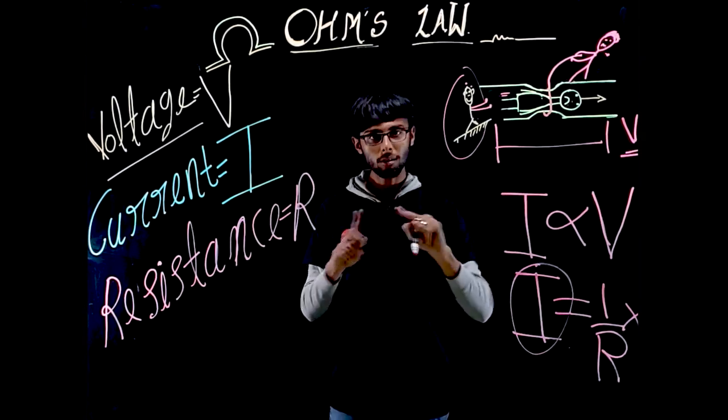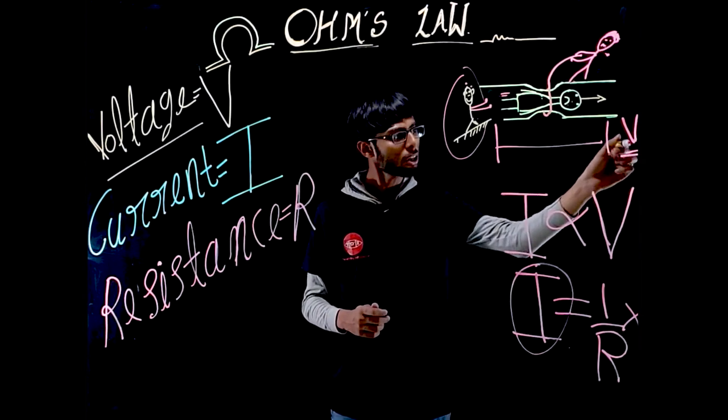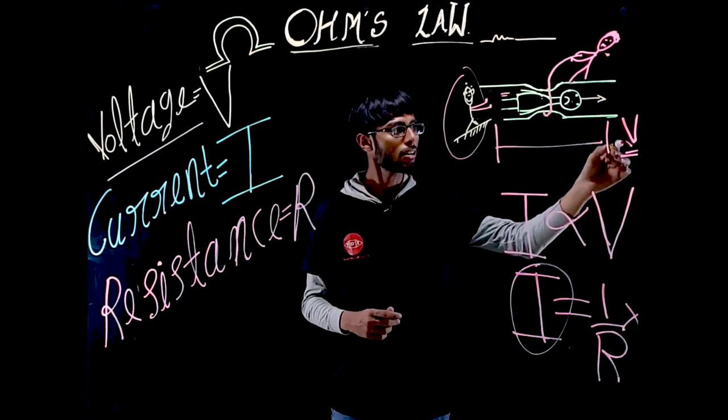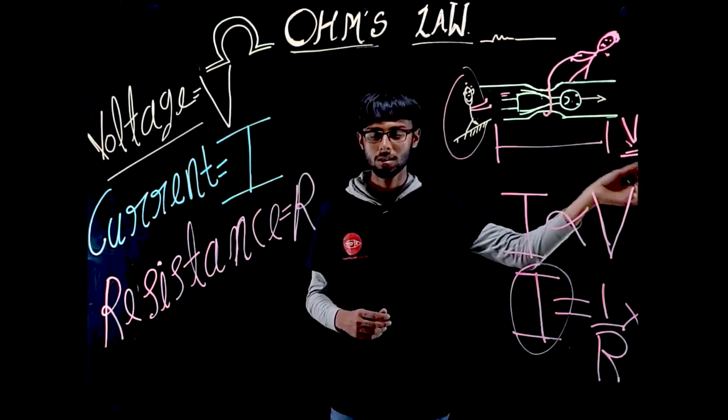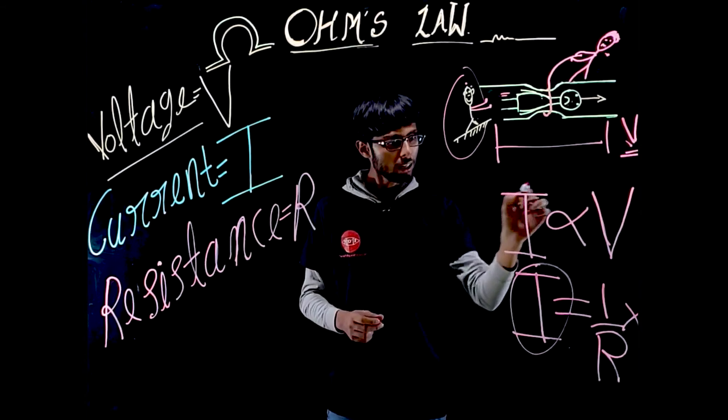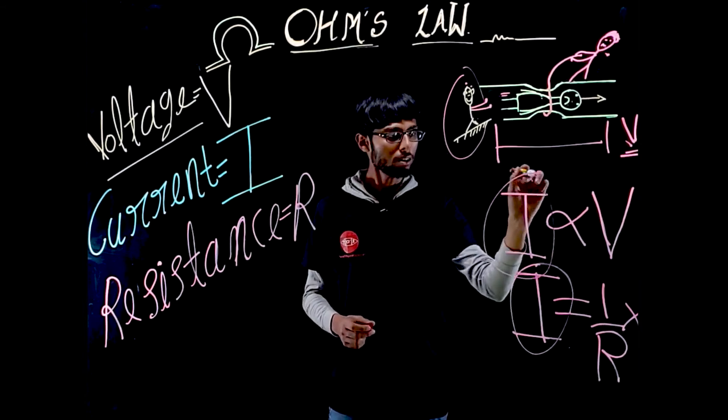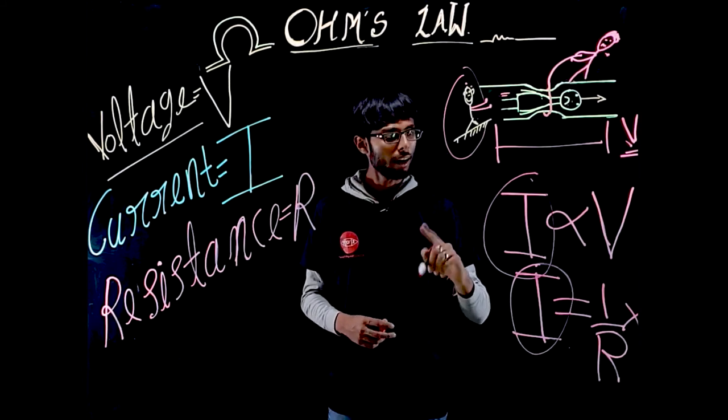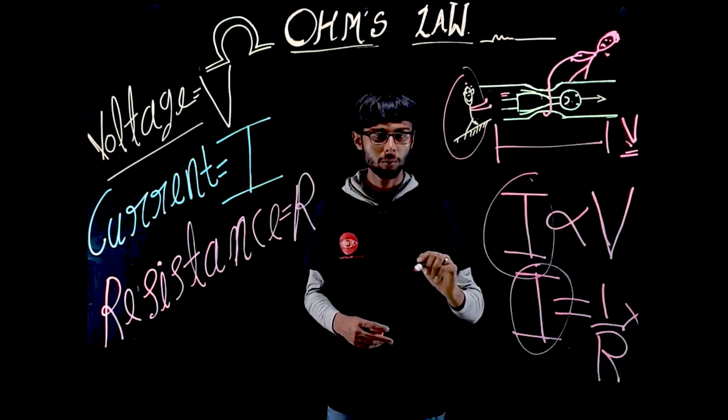Please note that Ohm's law can never be stated as potential difference across a conductor equals current multiplied by resistance. It is not like that. Rather, the current flowing through the conductor is proportional to the voltage applied across the conductor, and not the voltage proportional to current. Okay?